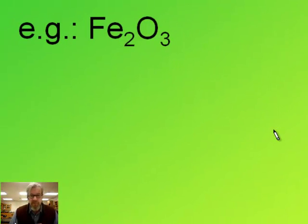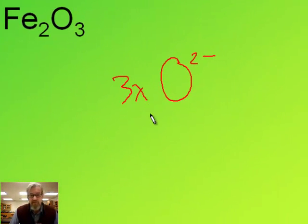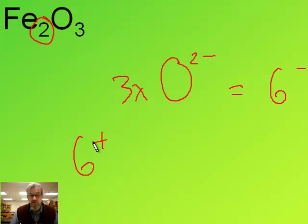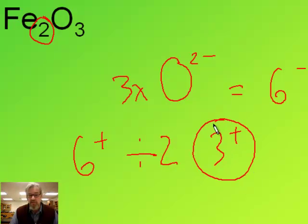Here's another example: Fe2O3. Oxygen is a group six, so oxygen has two minus when it's an ion. We have three of them because of the subscript three, so our total negative charge is six minus. That means our positive charge must be six plus as well. But that's divided among two irons because it's Fe2, so dividing six plus by the subscript of iron, we find that each iron must be a three plus charge.